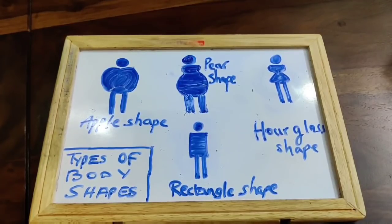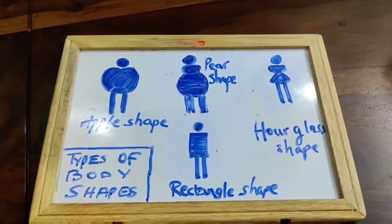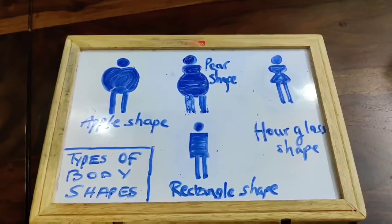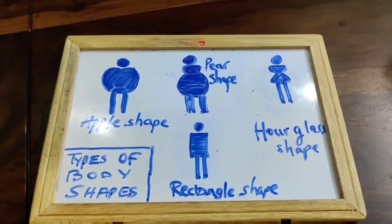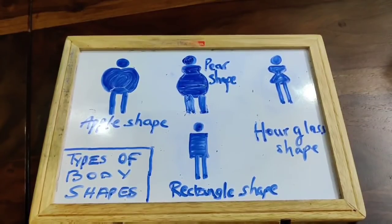So let's start with this topic on types of body shapes. There are many types, but in today's video I'm going to explain the important ones: apple shape obesity, pear shape obesity, hourglass shape, and rectangle shape.